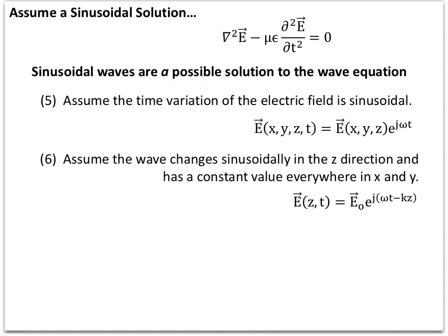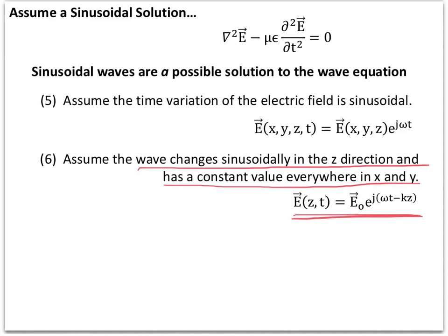Another assumption I'm going to make is that the wave changes sinusoidally in the Z direction and otherwise has a constant value everywhere in X and Y — no matter where you look in X and Y, the electric field points in the same direction with exactly the same value. This gives a solution of a specific form. Although waves may not actually propagate in the Z direction, remember that I'm allowed to rotate my coordinate axes. You can point the axes so the direction the wave is going corresponds to Z, and this gives the general solution called a plane wave — which we'll explore in detail in the next video.